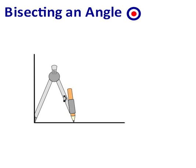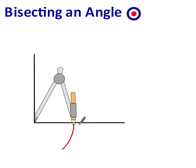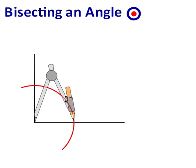We're going to draw an arc, and it must intersect both lines that have created your angle. Both this line needs to be intersected and this line needs to be intersected.